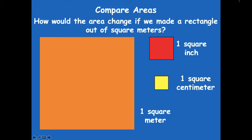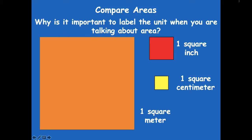Remember, we talked about how the size makes a difference in the area. How would the area change if we made a rectangle out of square meters? We just did two rectangles with 12 square inches and 12 square centimeters — how would the area change if we used 12 square meters? It would be so much larger, because the unit of measure is much larger. Why is it important to label the unit when talking about area — square inches, square centimeters, square meters? Because the size of the unit definitely changes the area, the space that the object takes up. The larger the unit, the larger the area; the smaller the unit, the smaller the area.